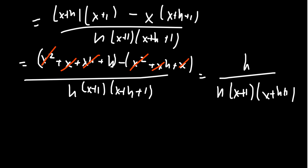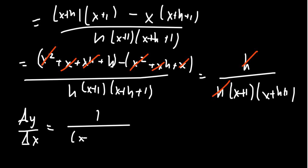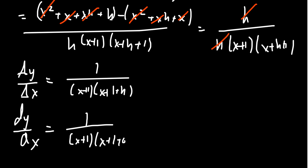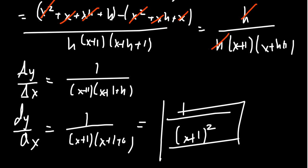The h on top cancels with the h in the denominator. So the simplified average rate of change is 1 over (x+1)(x+h+1). For the instantaneous rate of change, we set h equal to zero, giving 1 over (x+1)(x+1+0), which simplifies to 1 over (x+1)².